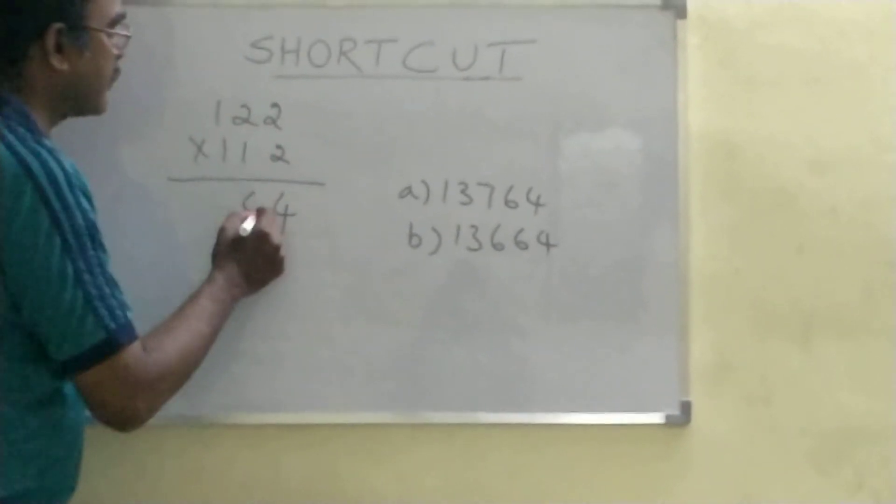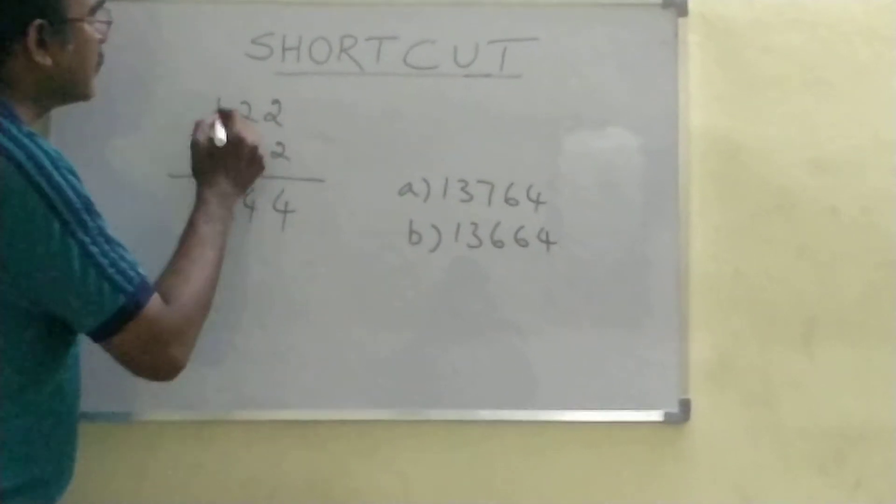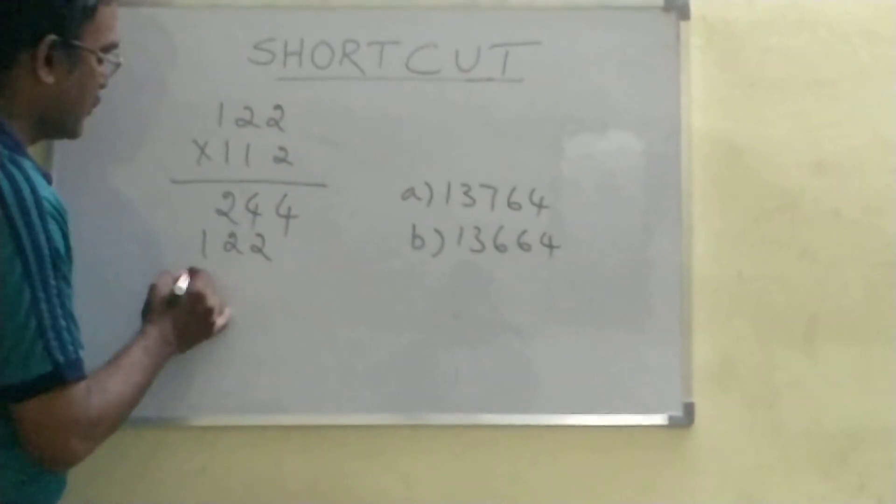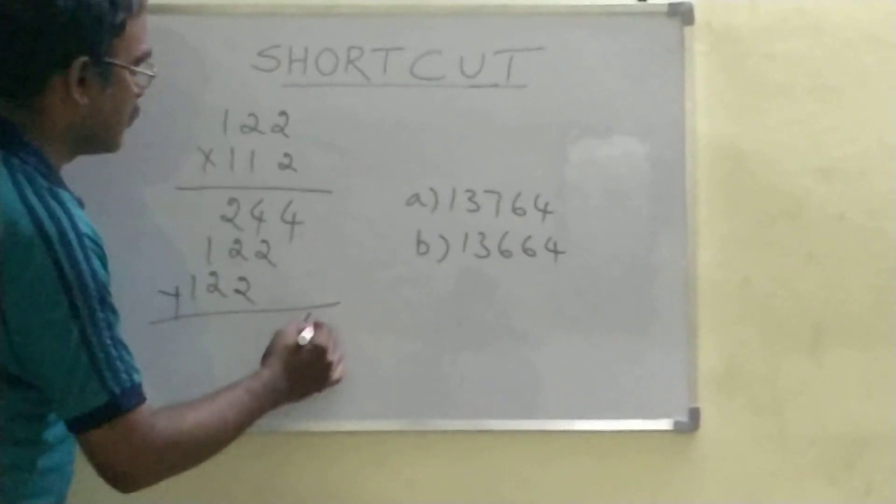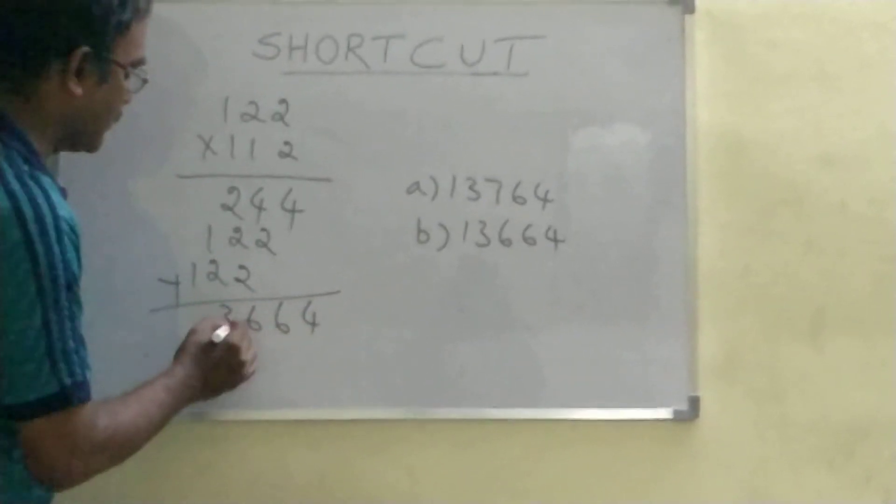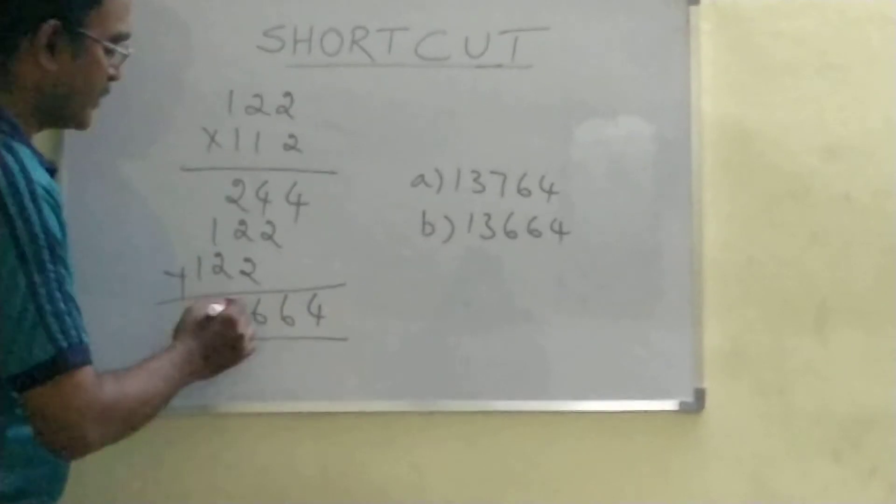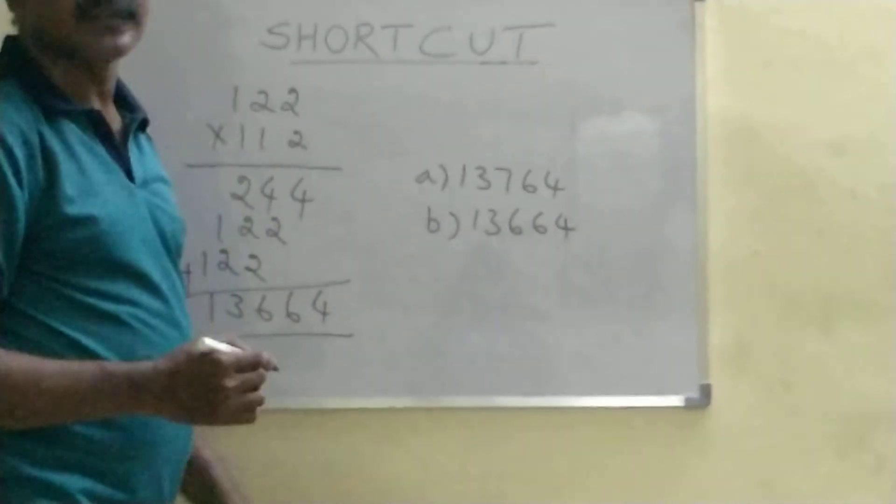Let me check our conventional method. 2, 2s are 4, 2, 2s are 4, 2, 1s are 2. This 1 multiplied by 1, it will give the same thing. So, 122. Once you add this, this is 4, 6, 6, 3, 1. 1, 3, double 6, 4. So, you will get the idea. Second option is correct.